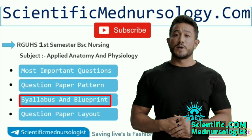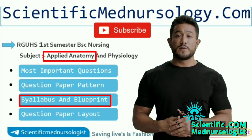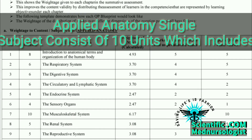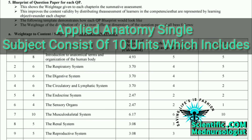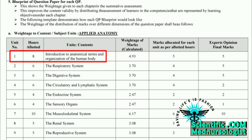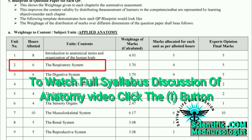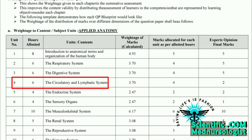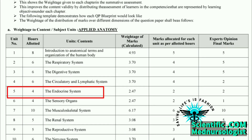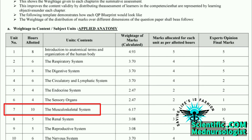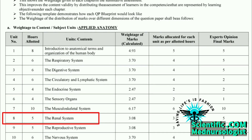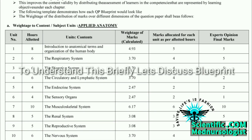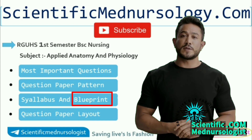Firstly, let's discuss the syllabus and blueprint of Applied Anatomy to get a brief knowledge about the weightage of marks per unit of the syllabus. Our Applied Anatomy subject consists of 10 units: Unit 1 Introduction to Anatomical Terms and Organization of the Human Body, Unit 2 The Respiratory System, Unit 3 The Digestive System, Unit 4 The Circulatory and Lymphatic System, Unit 5 The Endocrine System, Unit 6 The Sensory Organs, Unit 7 Musculoskeletal System, Unit 8 The Renal System, Unit 9 The Reproductive System, Unit 10 The Nervous System.